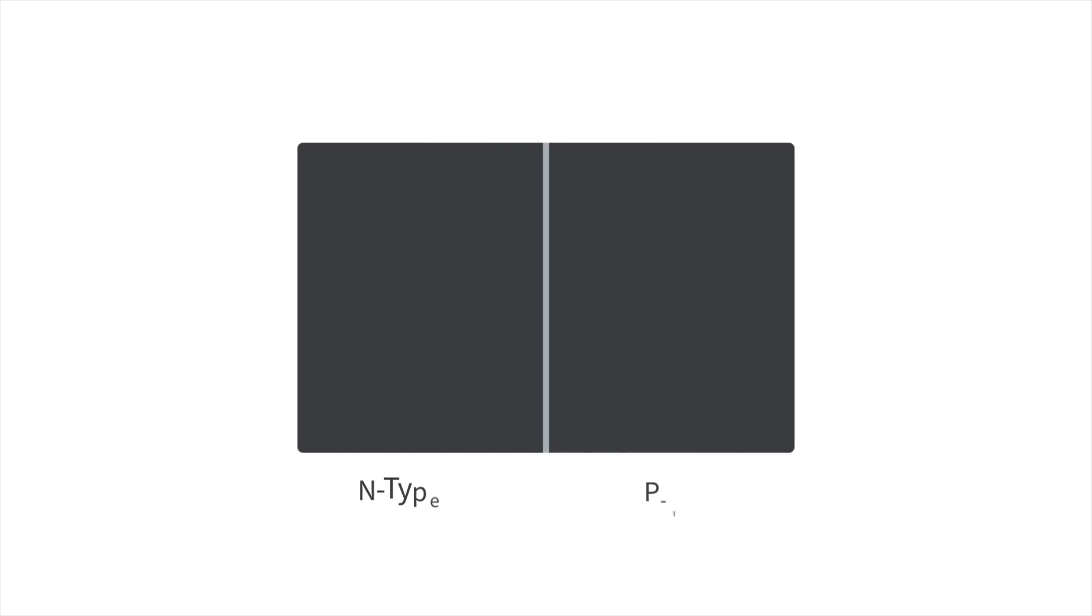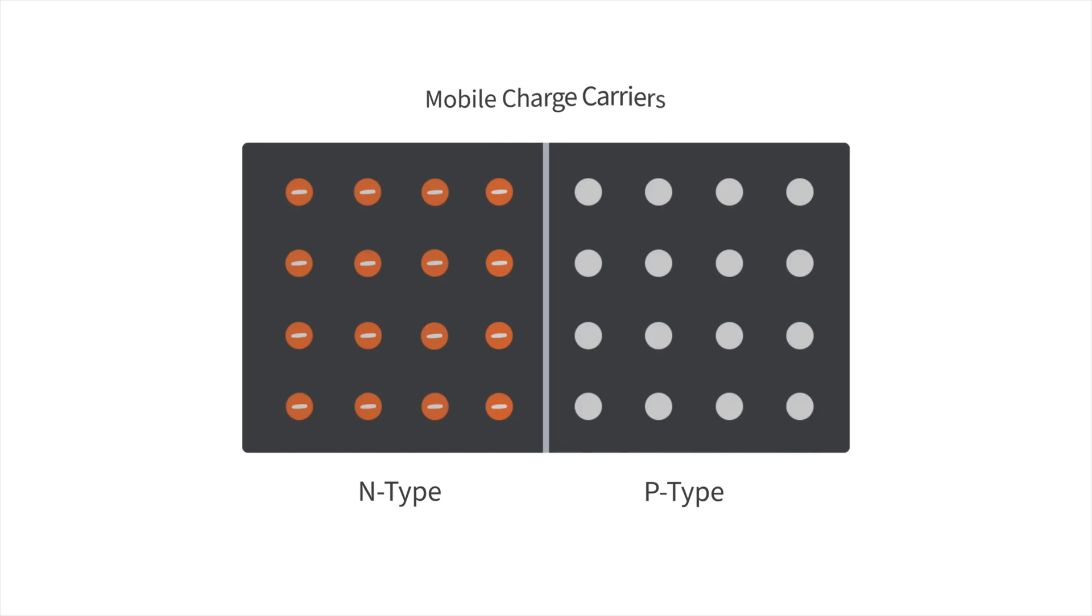Before understanding why this is done in a JFET, it's beneficial to first review what happens when a p-type and n-type semiconductor meet each other side by side at a p-n junction. Both n- and p-type semiconductors have mobile charge carriers, electrons and holes respectively.